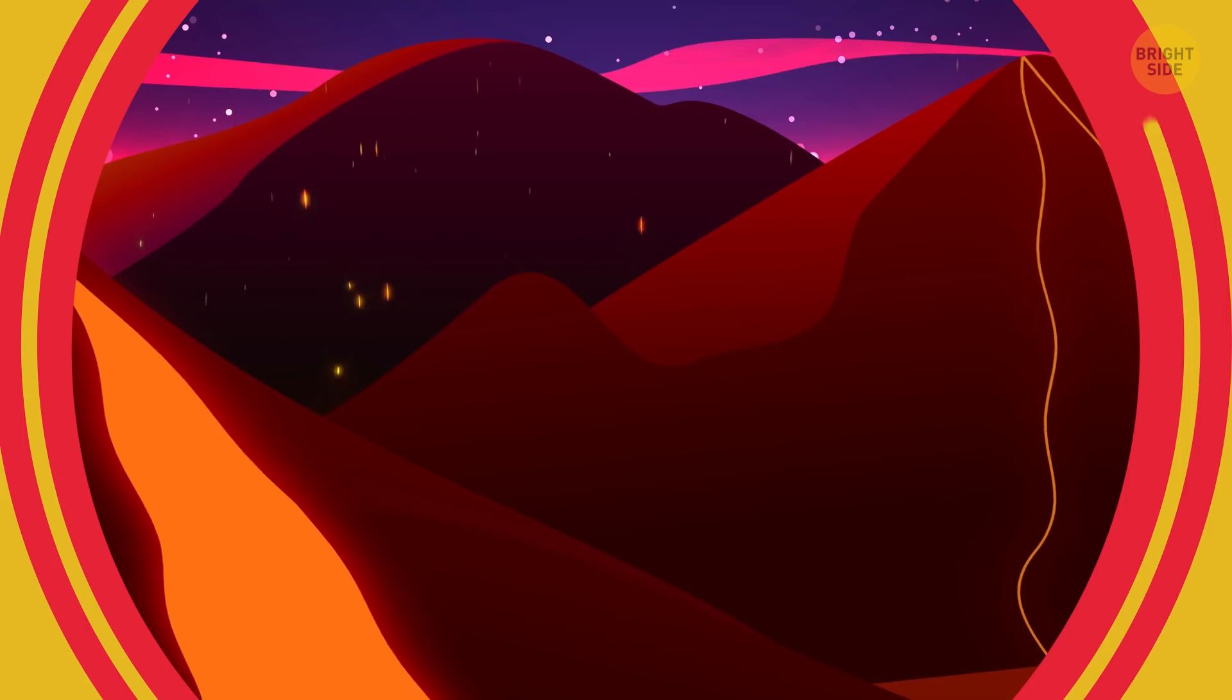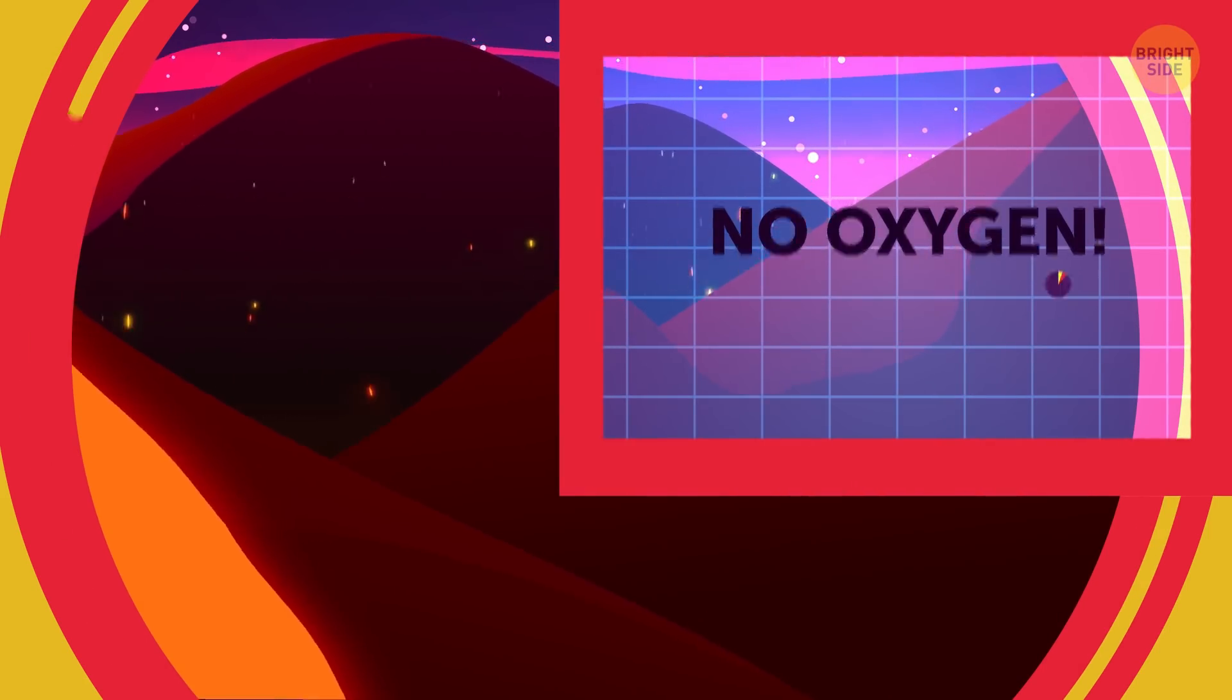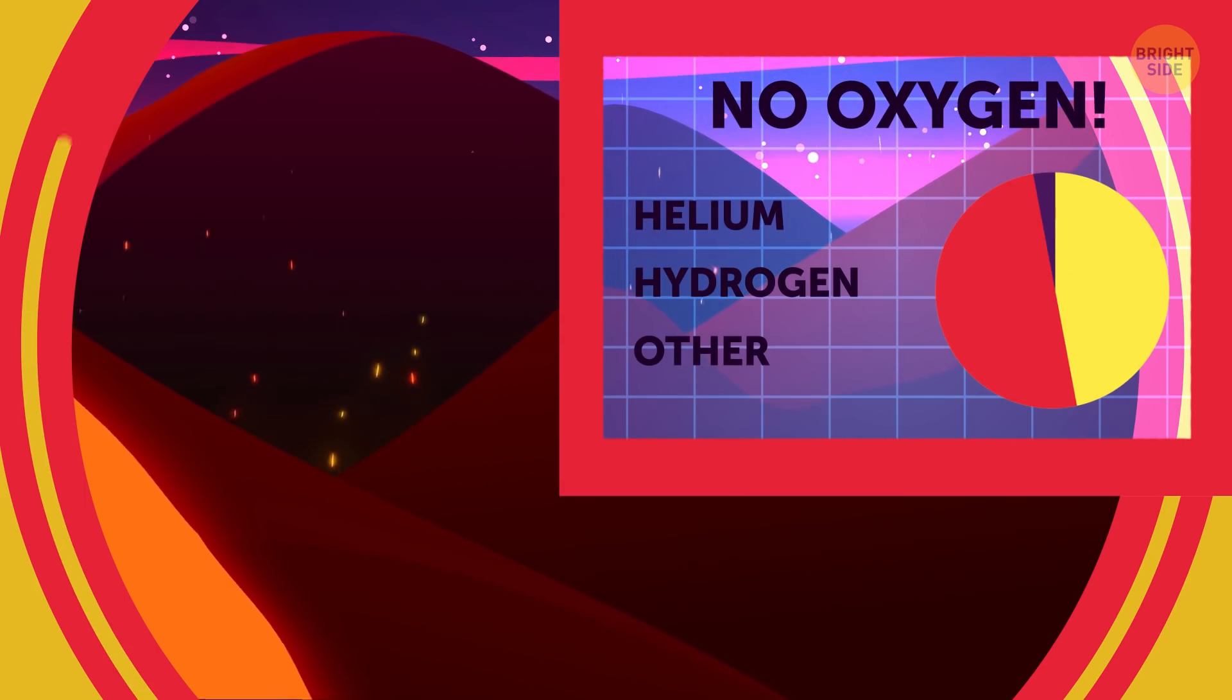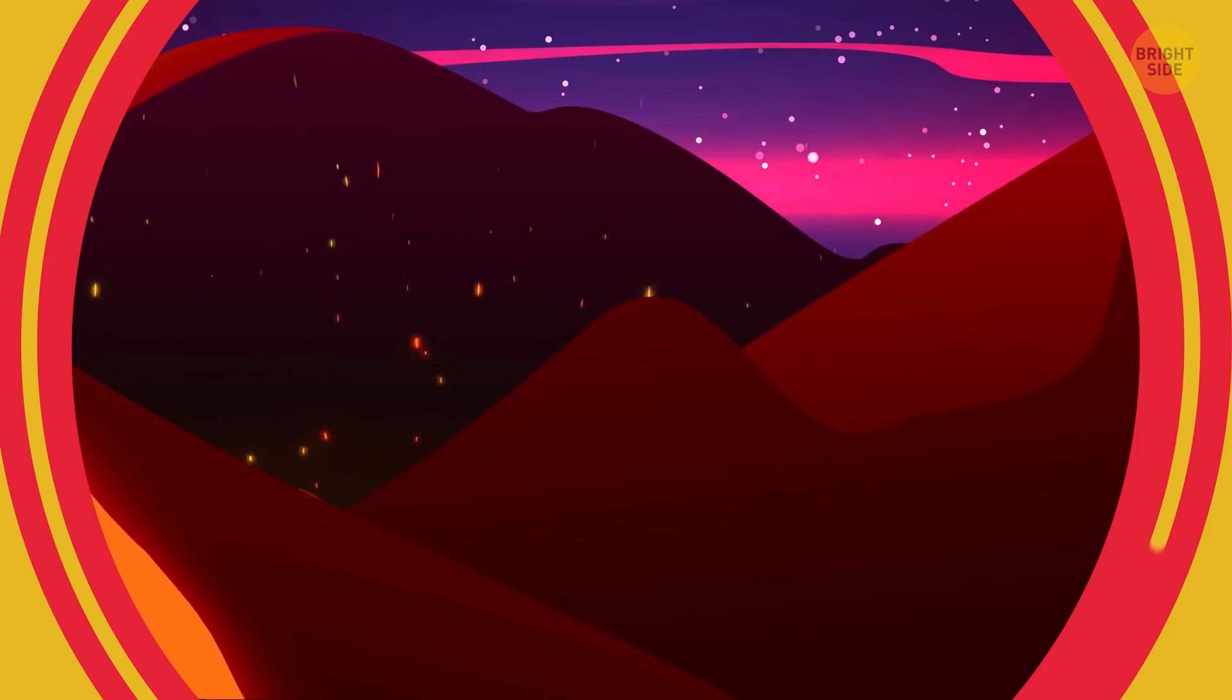You can also thank a huge Mars-sized object for crashing into our planet and forming the Moon at this time. Why is it so hard to breathe? There's no oxygen in the atmosphere yet. It's mostly just helium and hydrogen during these early Earth days.